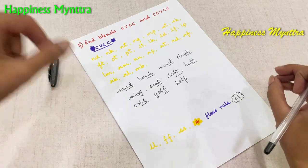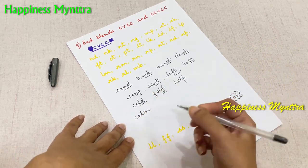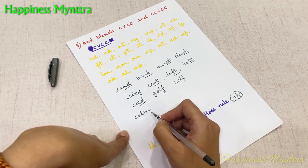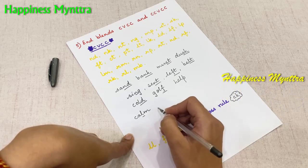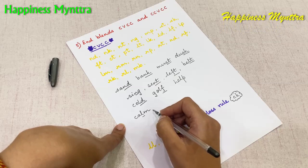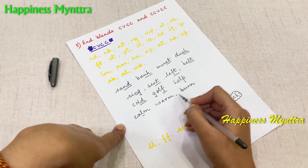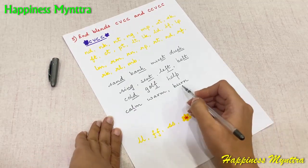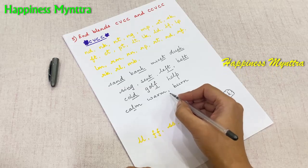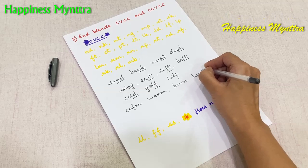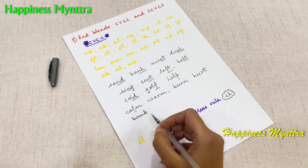There are certain words where the first letter of the blend is not very prominent. For example, a word like 'Calm' — the L is not silent, because otherwise the word would be 'Cam.' But we have the L in between, so it is 'Calm.' We also have 'Warm,' 'Burn' — these also relate to the bossy R concept which will be taken up later. The sound needs to flow: 'Warm,' 'Burn,' 'Hurt,' 'Bomb.'